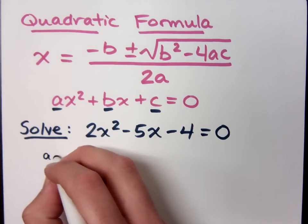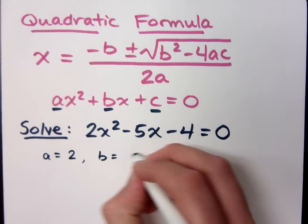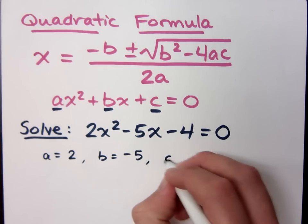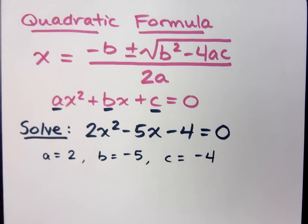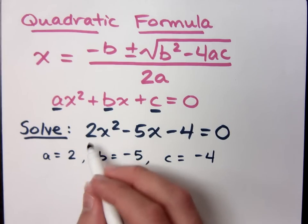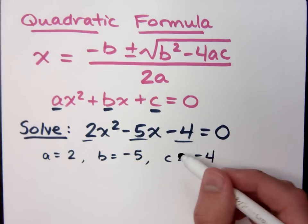Now your a is the coefficient of x squared, so it's just 2. b is the coefficient of x, so that's negative 5. And c is your constant term, which is negative 4. Remember, your a, b, and c are just the coefficients and the constant term. It doesn't include any x here.